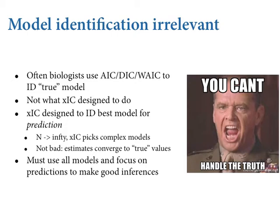This is important because you'll sometimes read that information criteria are inconsistent for model identification, which is correct — because that's not what they're designed to do. Inconsistent in statistics means that as the sample size goes to infinity, AIC, DIC, and WAIC don't pick the data-generating model. But they will pick perfect predictions. So there's no harm in that.